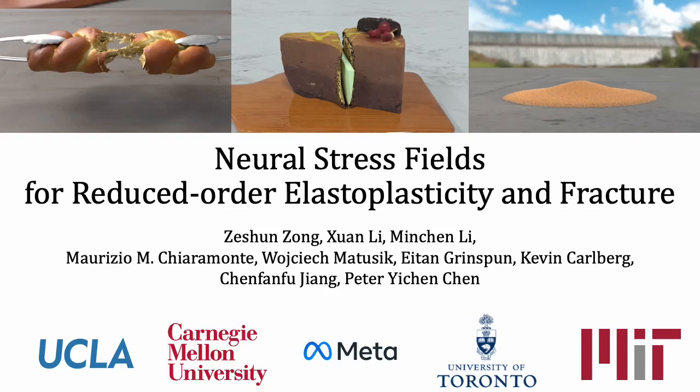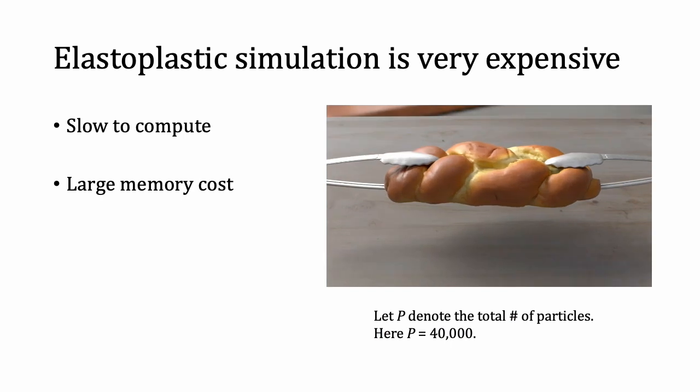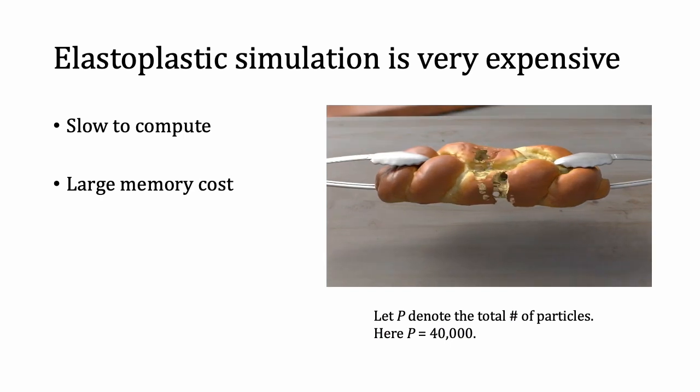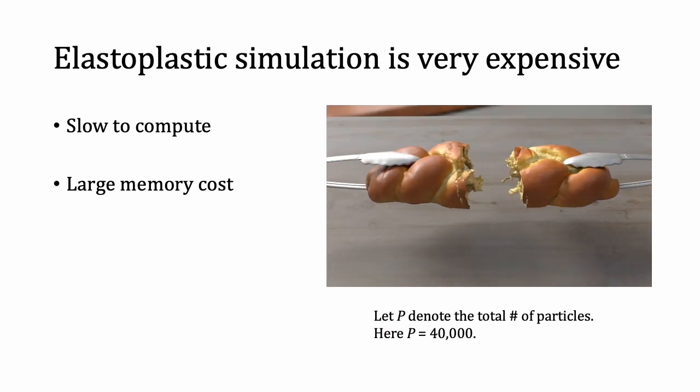We present neural stress fields for reduced-order elastoplasticity and fracture. Elastoplastic and fracture simulation is in general very expensive — slow to compute and requiring large memory cost. Here we show a bread breaking, simulated by the material point method, or MPM.